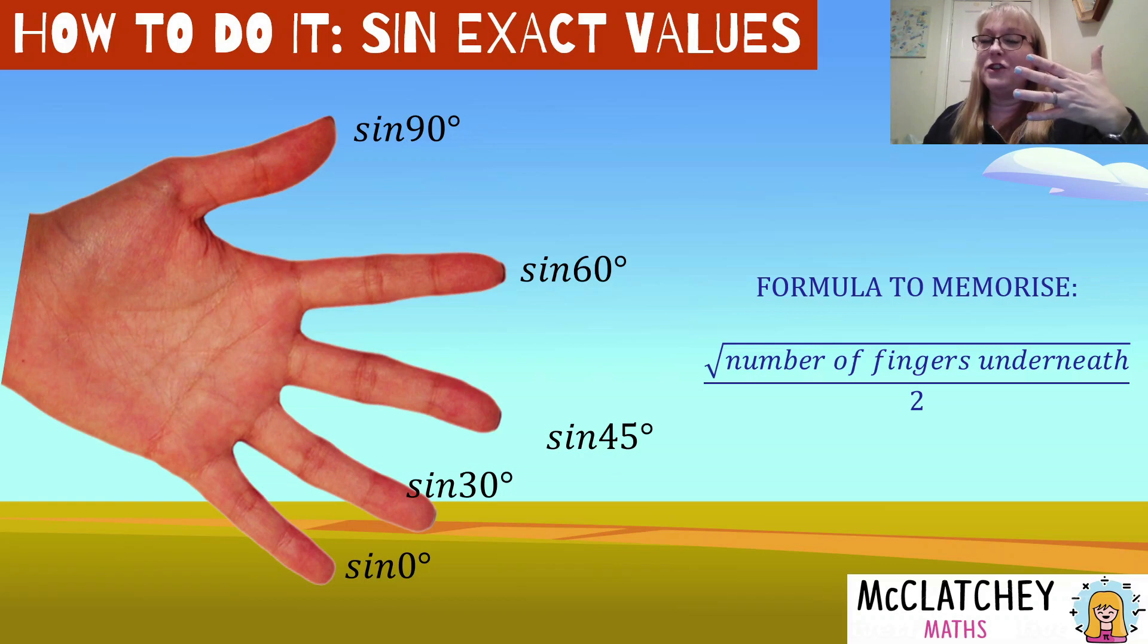An easy way to think of that is when your hand and fingers are together, your hand makes a right angle. So that's an easy way to remember that thumb is 90 degrees. Now we've got a formula, you do need to memorize something. The formula for all the sine exact values is: hold down the finger for the exact value you want to find, and the formula is the number of fingers underneath that finger, the square root of that divided by two.